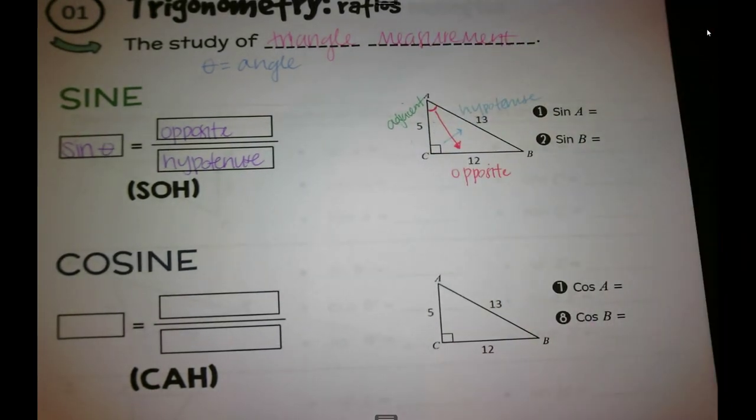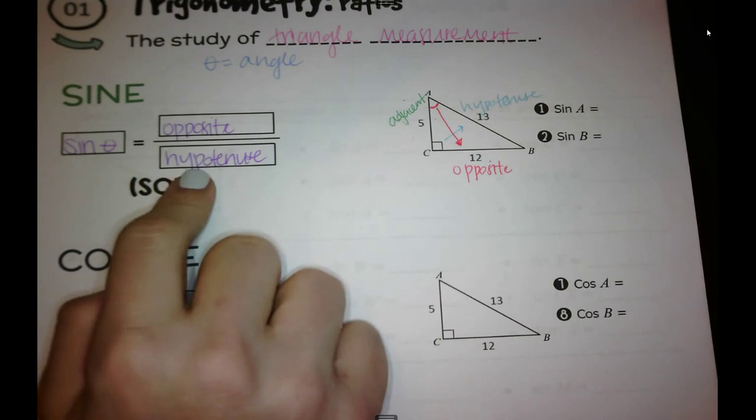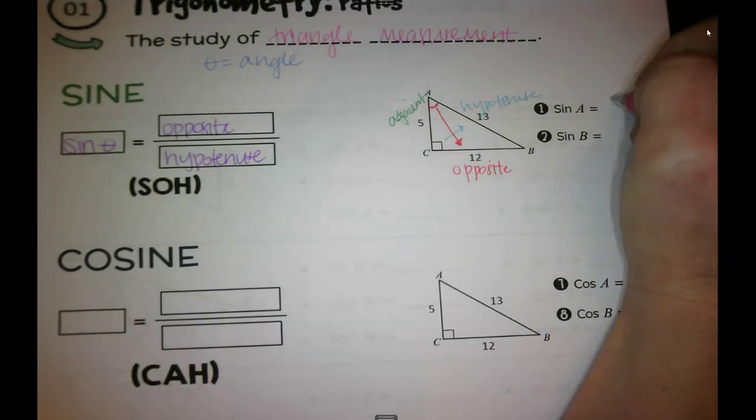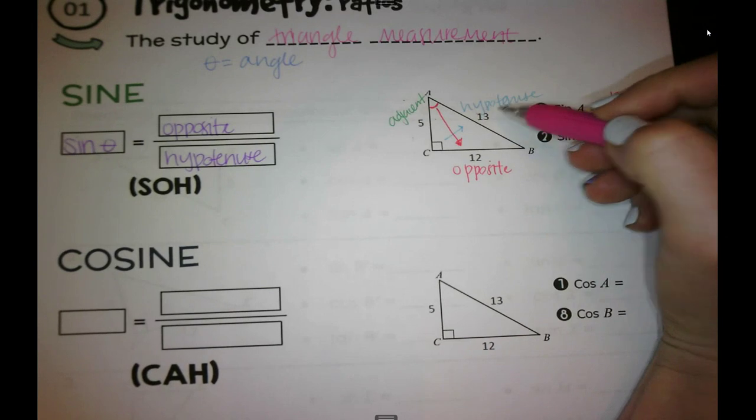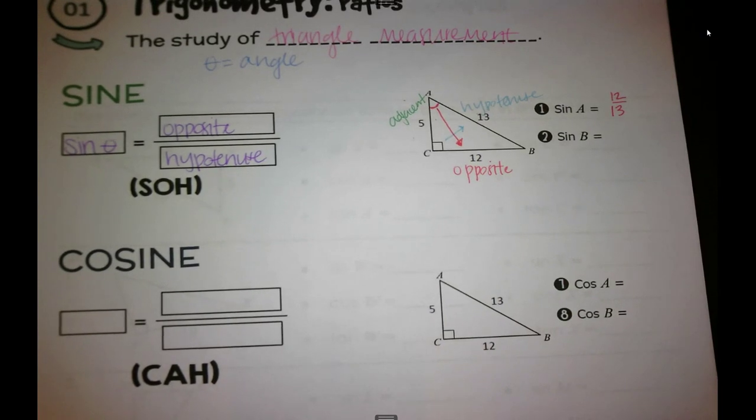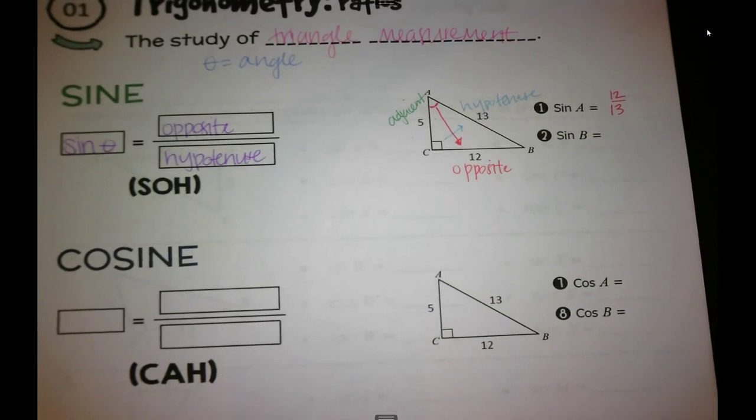Okay, for sine, we're talking about opposite over hypotenuse. So opposite, 12 over hypotenuse, 13. That's it. That's all we're going to be looking at right now. We'll go into more detail later.